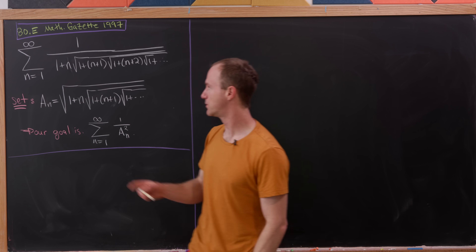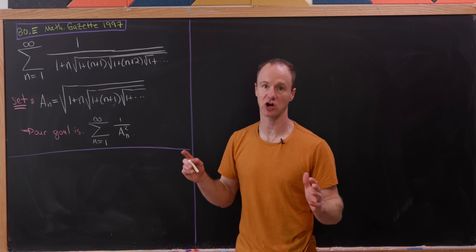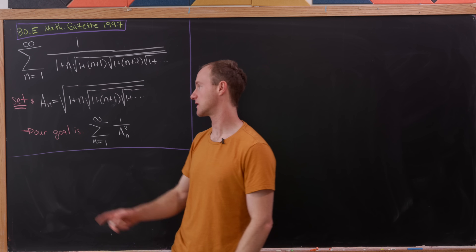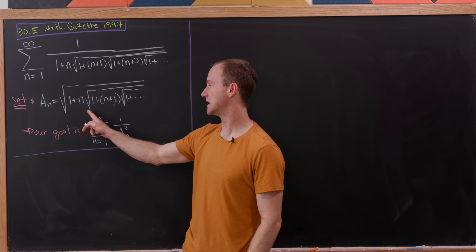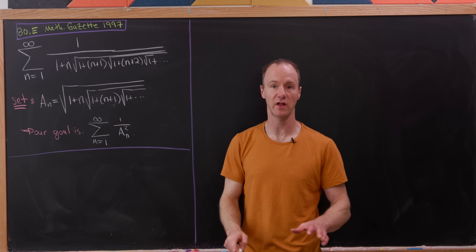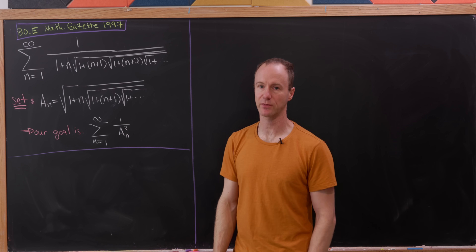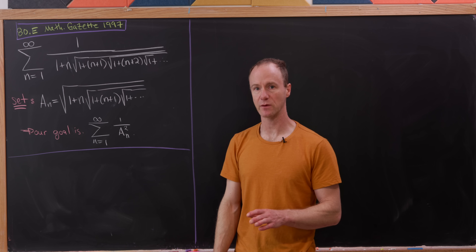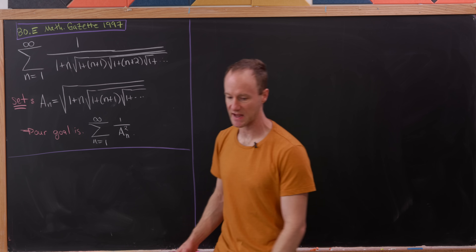The first thing we want to do is put this 1 inside of another square root, just so that we have a similar structure throughout. We're going to set that equal to A sub n (capital A sub n). So A sub n is the square root of 1 plus n times the square root of 1 plus n plus 1 times the square root of 1 plus, and so on. That means our goal is the sum of the reciprocal of the squares of this sequence A sub n. We can also pretty easily build a nice recursion for this sequence.